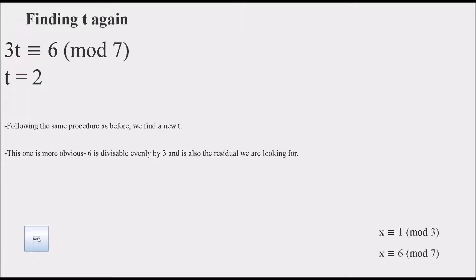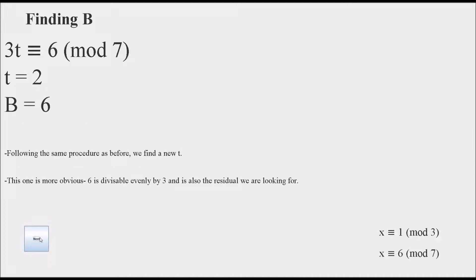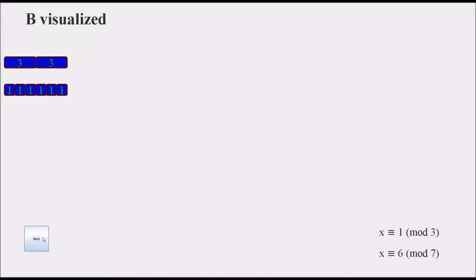Finding t again, we see that this time it's easier. 3 times 2 is 6, which in mod 7 is just 6, and 3 times t is going to be 0 no matter what, which is why we set up the equation like this. B therefore is 6, because 3 times 2 is 6, and here is a visualization: 2 blocks of 3 with no residual, or 6 ones.